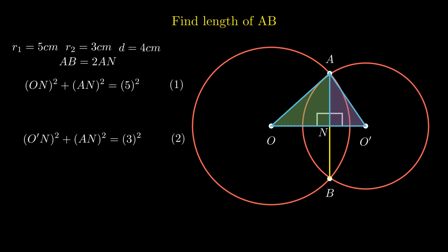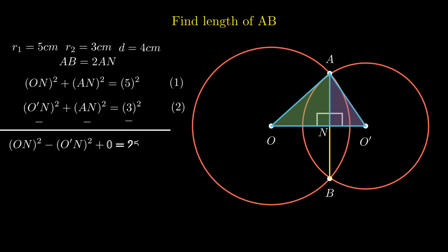On subtracting equation 1 and 2 we get ON square minus O'N square plus 0 equal to 25 minus 9. Therefore ON square minus O'N square equals 16. Again, this equation can't be simplified further as segment ON and O'N are different.